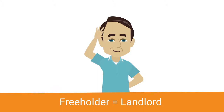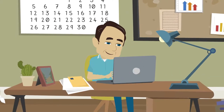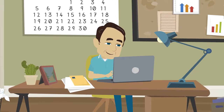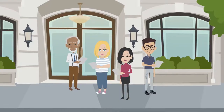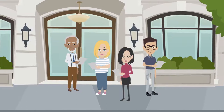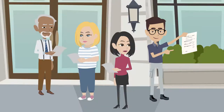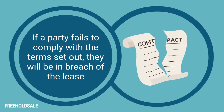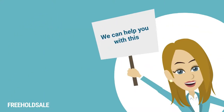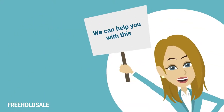Residential freeholders, also known as landlords, can have a vast number of responsibilities, the scope of which will be determined by the leases for the building. Every tenant will have a lease which serves as a contract between them and the freeholder and will also state each party's specific responsibilities. If either party fails to comply with the terms set out, they will be in breach of the lease and could face action from the opposing party, so it's imperative that you understand your obligations.